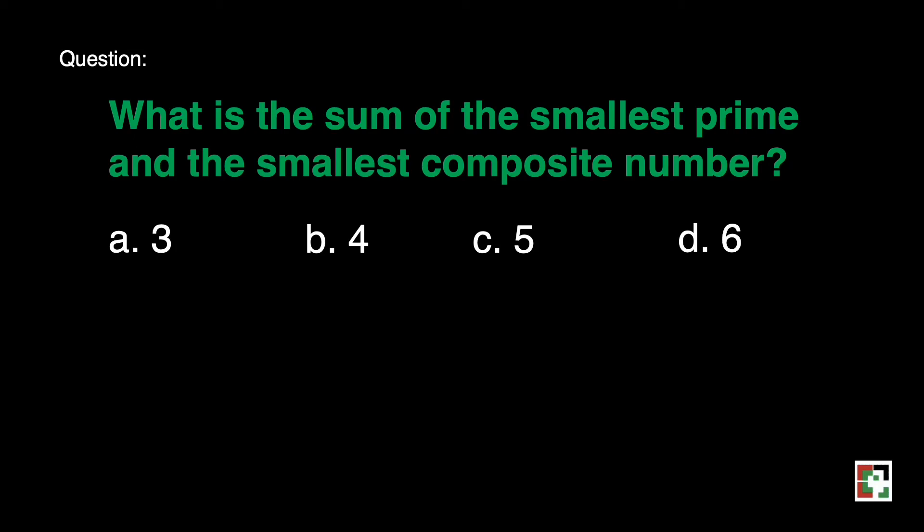The answer is, okay, what is the smallest prime number? That's 2. What is the smallest composite number? That's 4. So 4 plus 2 is equal to 6. So our answer for this question is letter d.